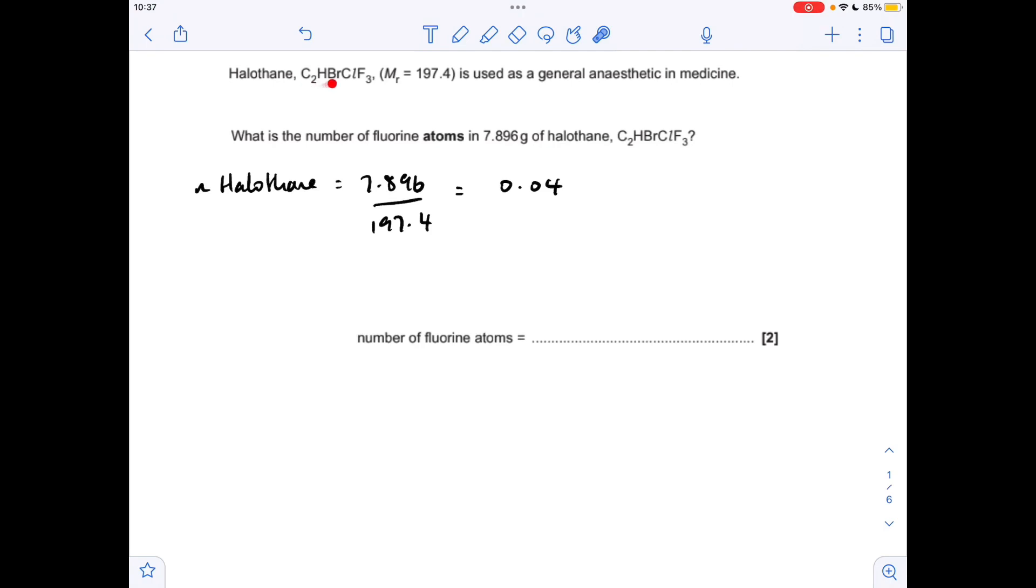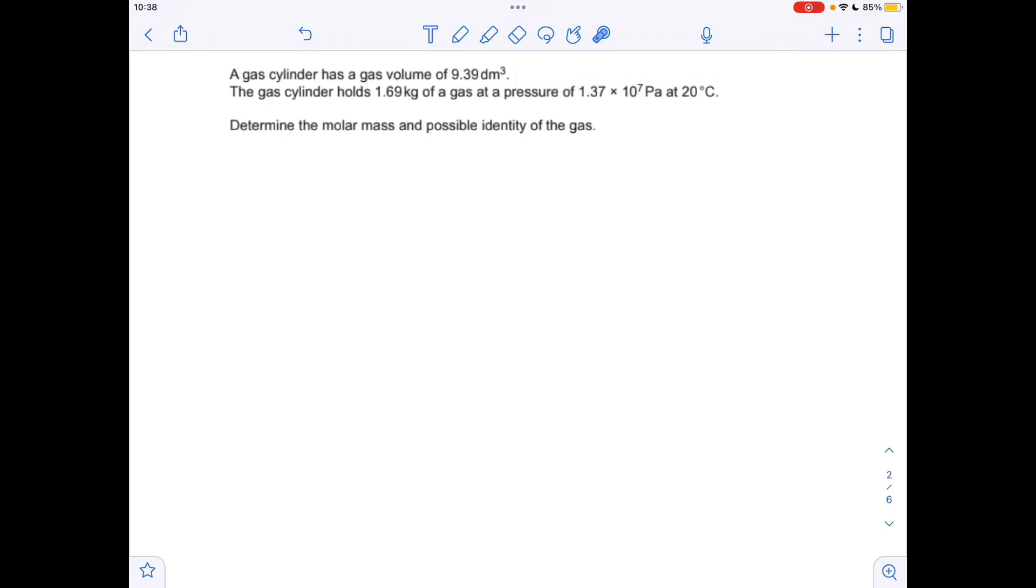The question's asking about how many fluorine atoms we've got. In every mole of halothane we've got three moles of fluorine atoms, so the moles of fluorine atoms is going to be 0.04 times 3, so obviously 0.12. To turn that into a number we just multiply by Avogadro's number.